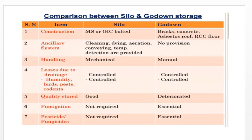Coming to the comparison between silo and godown storage — from a construction point of view, silos are generally made of bolted mild steel (MS) and galvanized iron (GI), while godowns use other materials. In silos, provisions for cleaning, drying, aeration, temperature detection, and fumigation are provided, whereas in godowns there is generally no such provision.